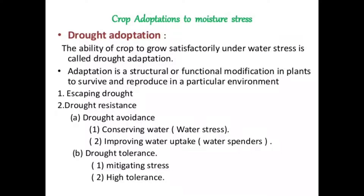There are different types of adaptations. The first is escaping drought. The second is drought resistance, which includes two types: drought avoidance — conserving water under stress, and improving water uptake — the water spenders. The second type under drought resistance is drought tolerance, which includes mitigating stress and high tolerance.